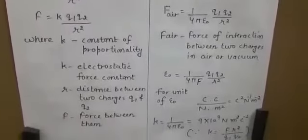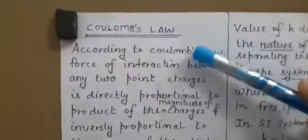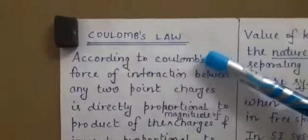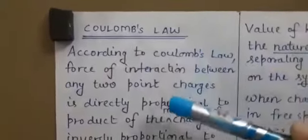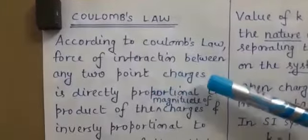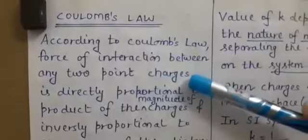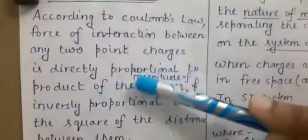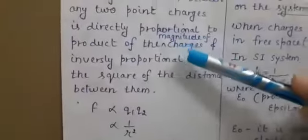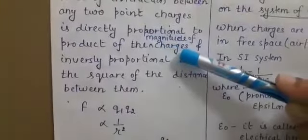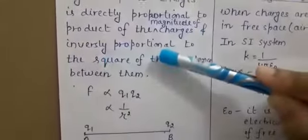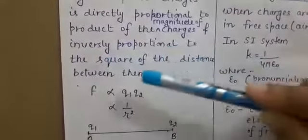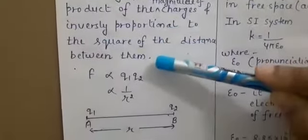Now coming to the next topic, that is Coulomb's Law. According to Coulomb's Law, the force of interaction between any two point charges is directly proportional to the product of the magnitude of the charges and inversely proportional to the square of the distance between them.